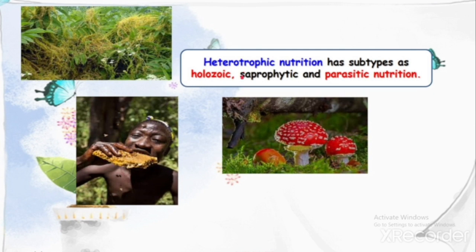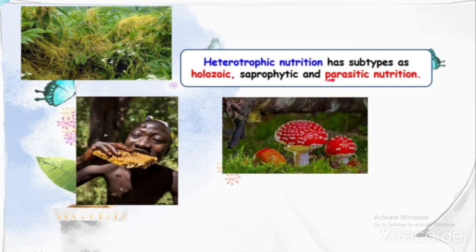Heterotrophic nutrition has subtypes: holozoic, saprophytic, and parasitic. In holozoic nutrition, organisms like human beings depend on other organisms for food. In saprophytic nutrition, organisms take food from dead and decaying materials. In parasitic nutrition, organisms lead a life on a host organism and depend on it for food.